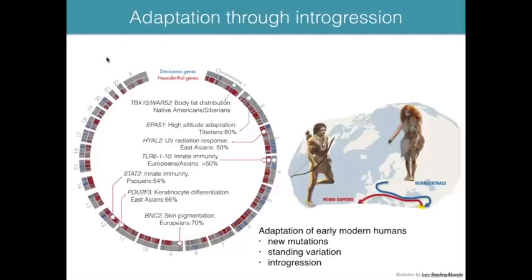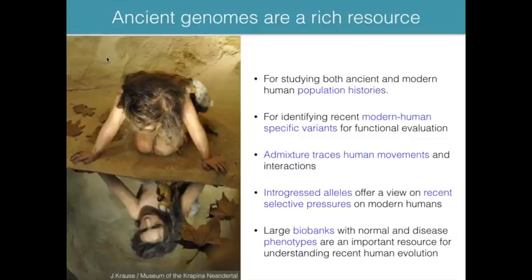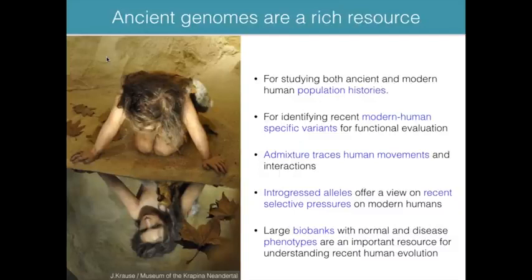Sequencing archaic genomes is not just a curiosity — it provides a rich resource for understanding archaic humans themselves, modern human population history, and adaptation. Patterns of Neanderthal ancestry tell us about how admixture happened and shaped human diversity. Introgressed Neanderthal DNA under selection points to traits and selective pressures important in recent modern human evolution, and linking introgressed DNA to phenotypic traits helps unravel the genetic architecture of those traits. Biobanks with detailed phenotyping information are an incredibly important resource for this research.